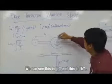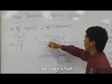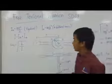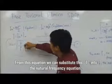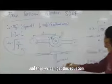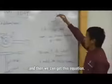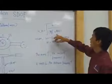We can see this, this is r and this is h. r and h is fixed. From this equation we can substitute this I in this natural frequency equation and then we can get this equation. This equation is 3k over mr squared over 2 plus ma squared.